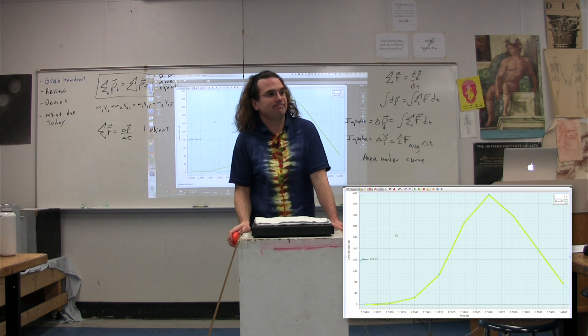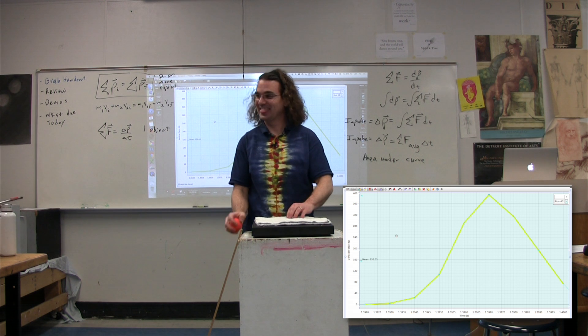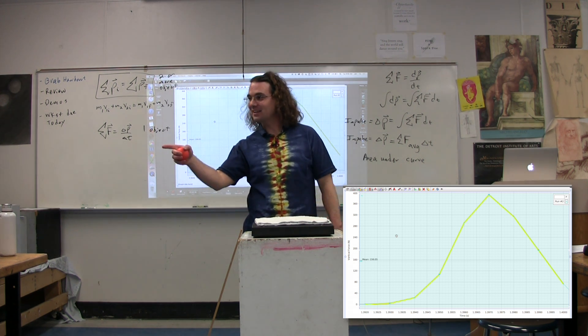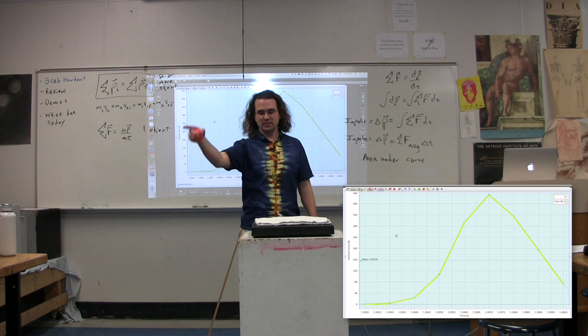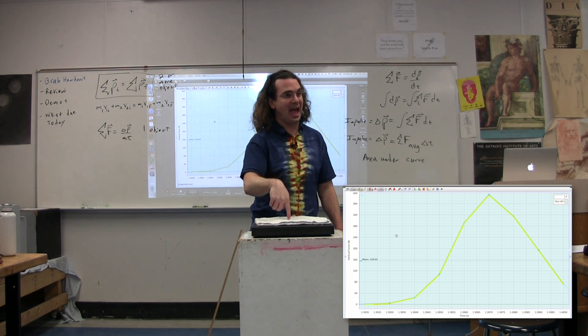Well, when you added the helmet, it didn't go as fast after the collision. So it had a lower velocity. Notice, you can see it with the height, which brings you to how fast it's going after the collision. When I drop it from here without a helmet, it goes up to roughly here. And when I drop it from here with a helmet, it only goes up to here.